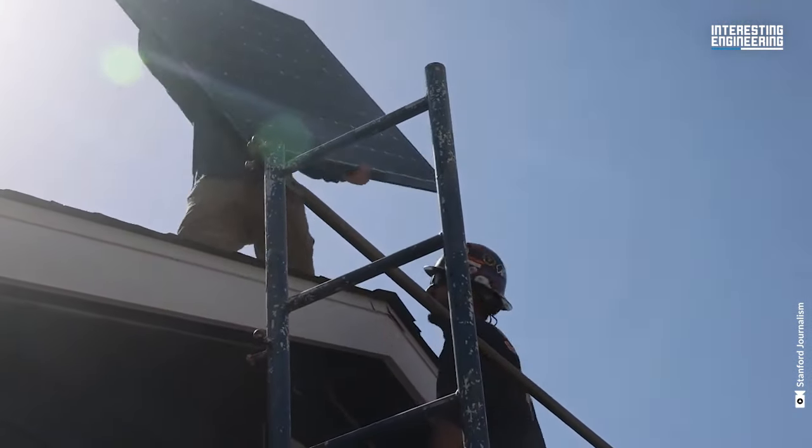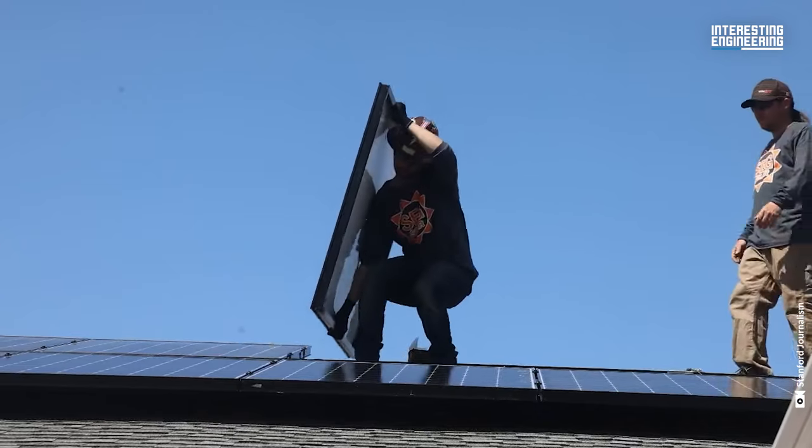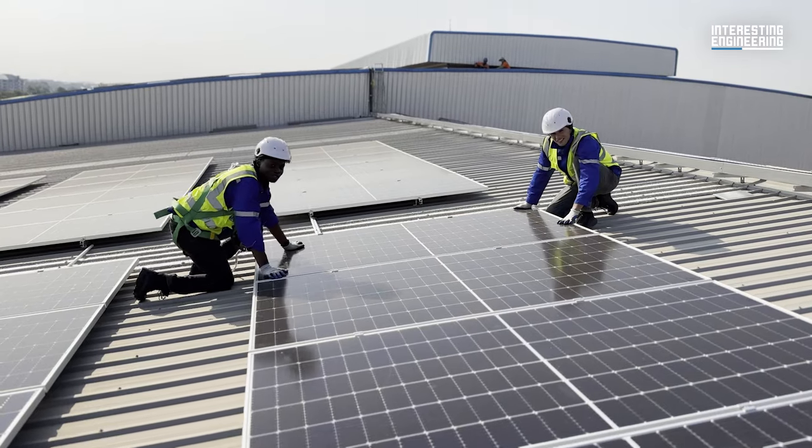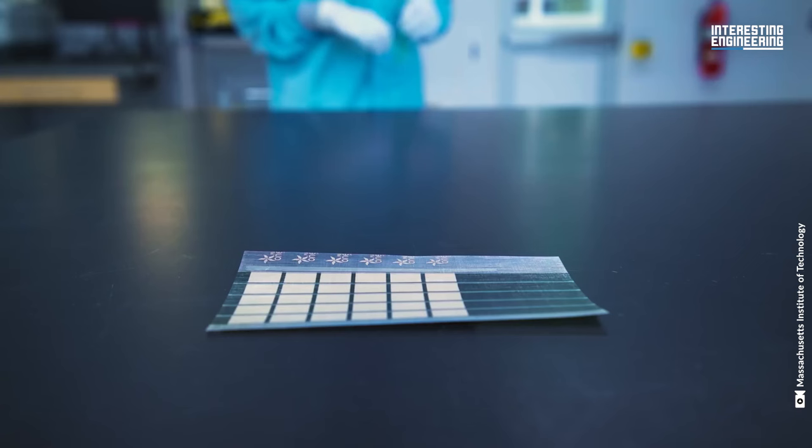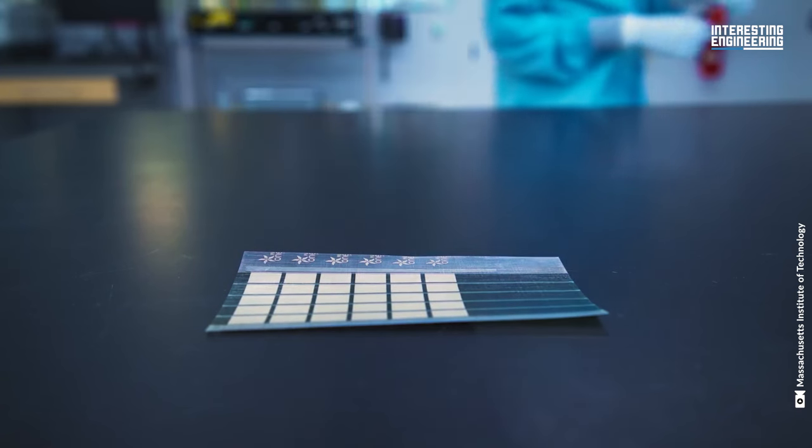Traditional silicon solar cells have their limitations. They're fragile and need to be encased in heavy glass and metal frames. This restricts where they can be installed. But MIT's new solar cells are a game changer.